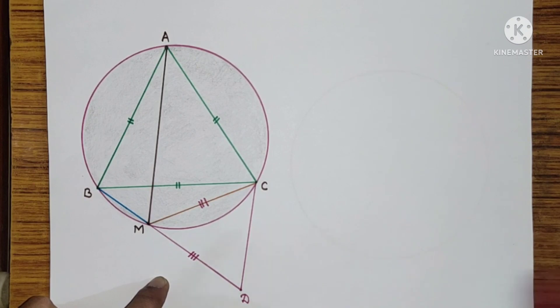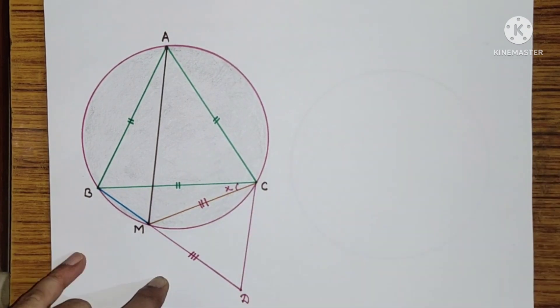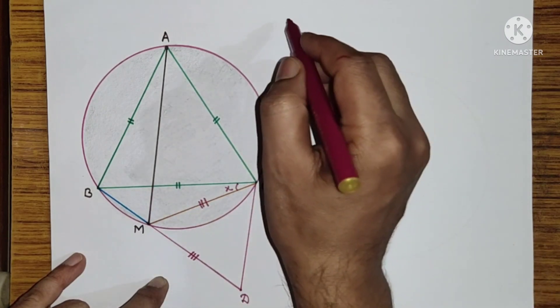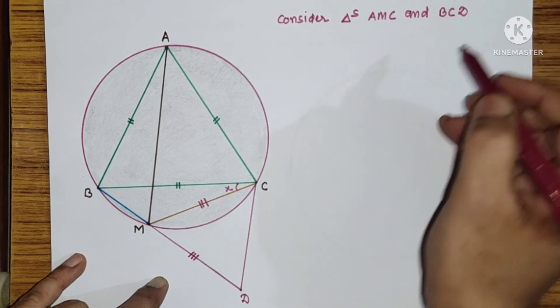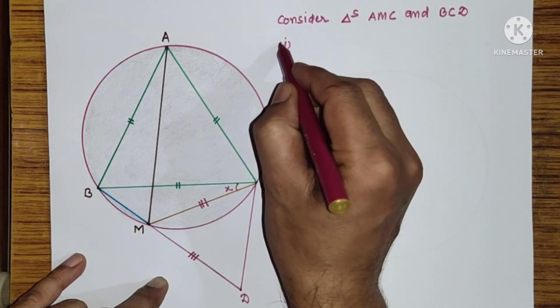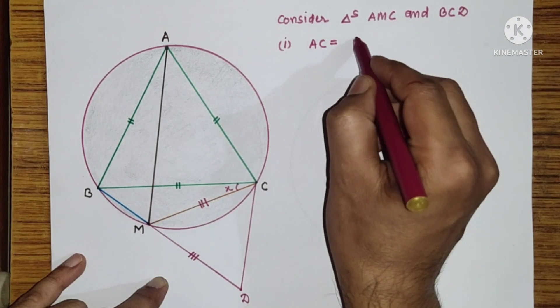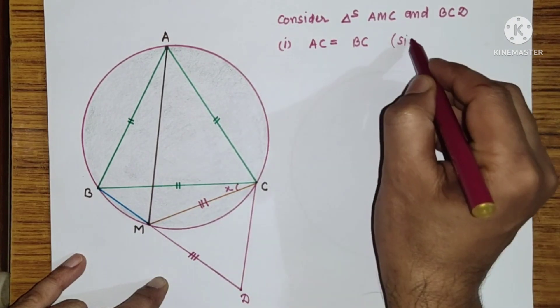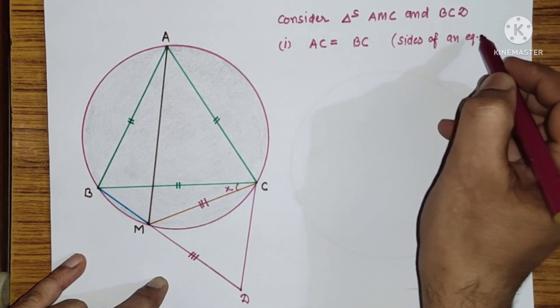Now, let this angle BCM be X. Considering the two triangles AMC and BCD, we are going to prove that these two triangles are congruent. So, first point AC is equal to BC as sides of an equilateral triangle.